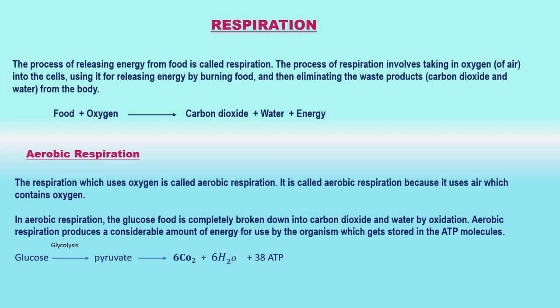The food material taken in during the process of nutrition is used in cells to provide energy for various life processes. Diverse organisms do this in different ways; some use oxygen to break down glucose completely into carbon dioxide and water, some use other pathways that do not involve oxygen. In all cases, the first step is the breakdown of glucose, a 6-carbon molecule, into a 3-carbon molecule called pyruvate.